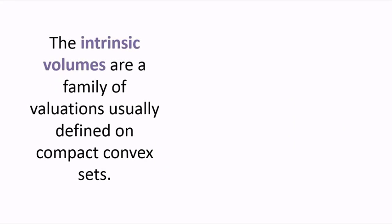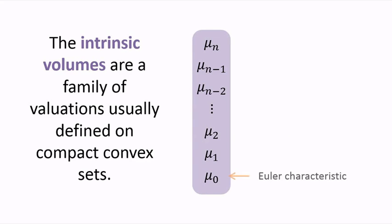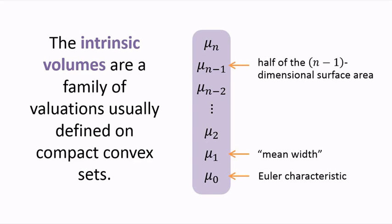An important family of valuations, called the intrinsic volumes, are usually defined on compact convex sets. For compact convex n-dimensional sets, there are n plus 1 intrinsic volumes, denoted mu 0 through mu n. In particular, mu 0 is the Euler characteristic, mu 1 gives a notion of length, often called mean width, mu n minus 1 is half the surface area, and mu n is the volume of the set.